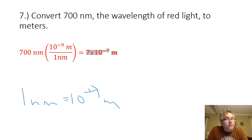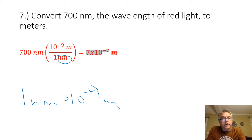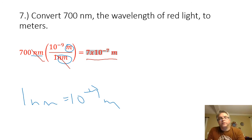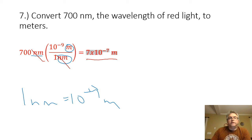If I want to convert 700 nanometers to meters, I simply use that conversion factor. I need to have nanometers in the denominator of my conversion because I have it in the numerator of my original value, and the unit I want to end with goes in the numerator. The nanometers cancel out, giving 700 times 10 to the minus ninth meters, or in proper scientific notation, 7.00 times 10 to the negative seventh meters.